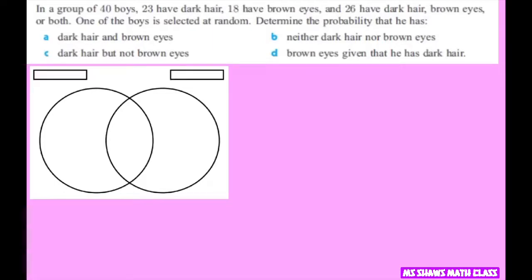The first thing we're going to do is set up a Venn diagram. So our first circle is for dark hair, and our second one is for brown eyes. And what you want to do is write this like it's A, B, C, and then we have D. And our universal set is 40.